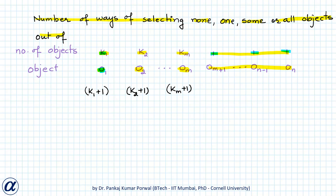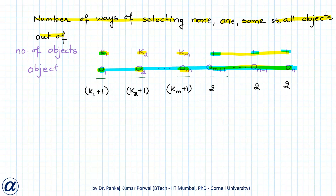For objects from OM plus 1 up to ON, we have one each, so for each one there are 2 options — select it or not. So there are 2 ways for each of the remaining objects. To select any number of objects overall, all these numbers of ways are multiplied together.